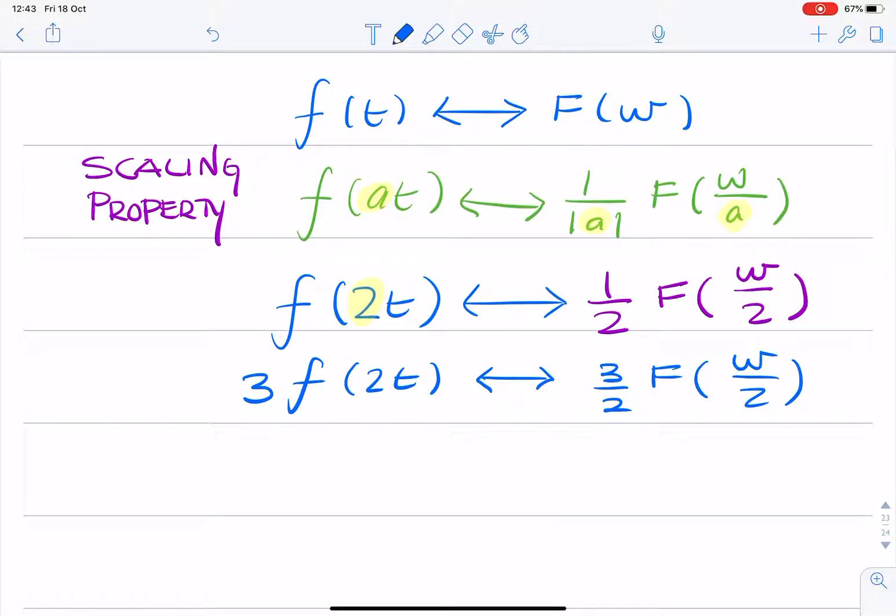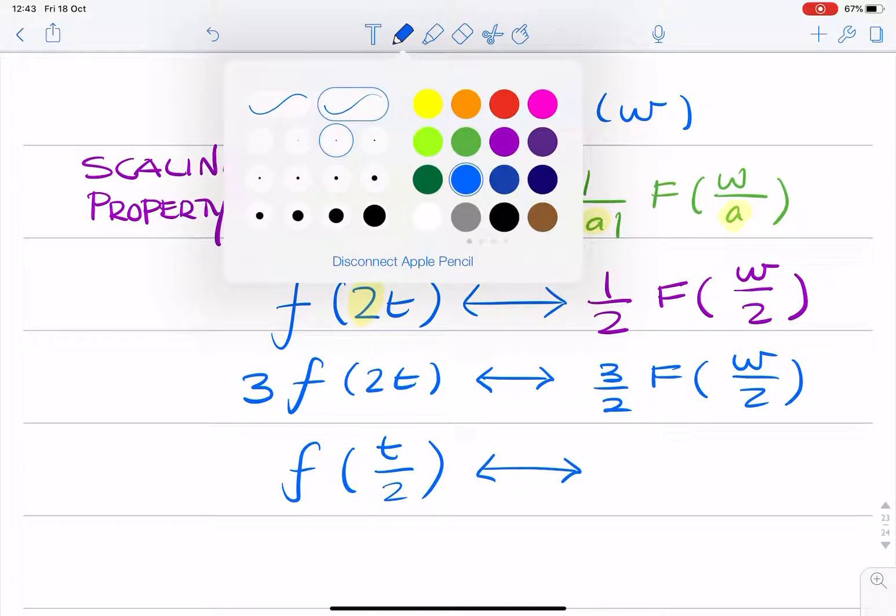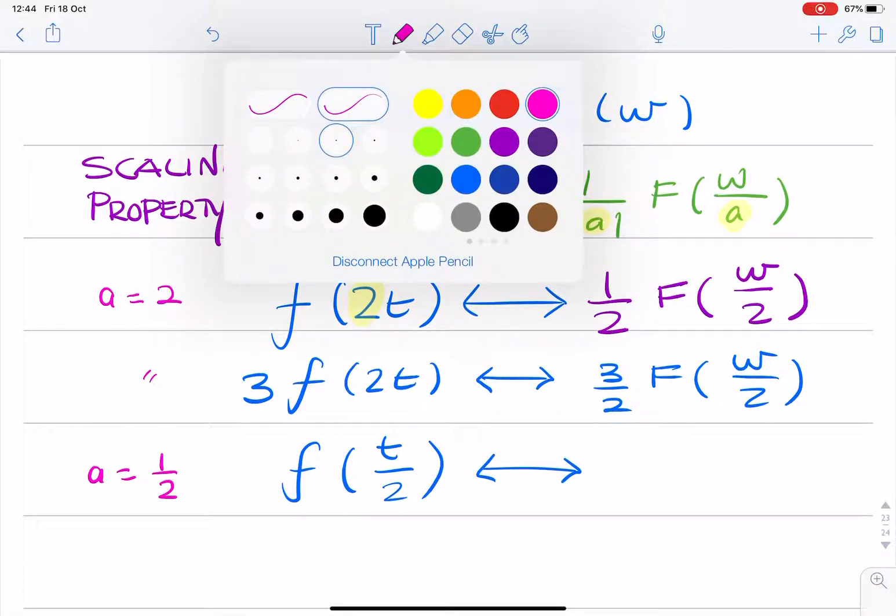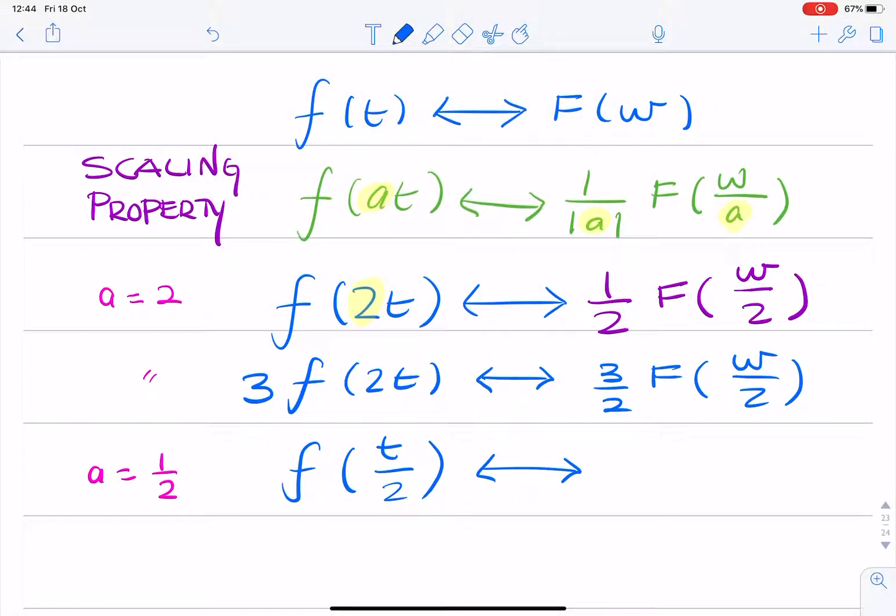The one after that asks for f of t over 2. And really, there's not much difference here. The only difference is that here, a equals a half, whereas in the previous question, a was equal to 2. So here, you'd have 1 divided by 1 over 2, which is just 2. So it's 2F of omega divided by half, which is simply 2 omega.